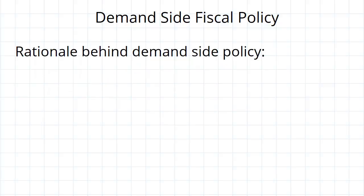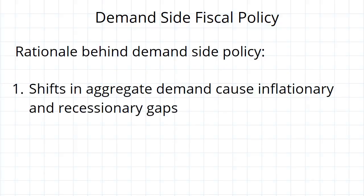The first thing in the rationale behind it is that shifts in aggregate demand cause inflationary and recessionary gaps. This is nothing new — when we looked at the aggregate supply and aggregate demand model, we saw that a shift in aggregate demand moves short-run equilibrium GDP away from potential GDP, creating these gaps.